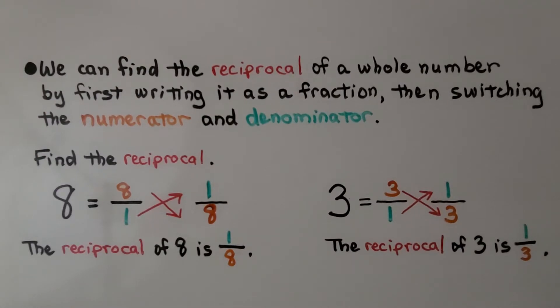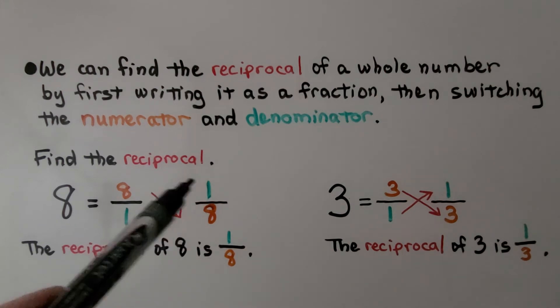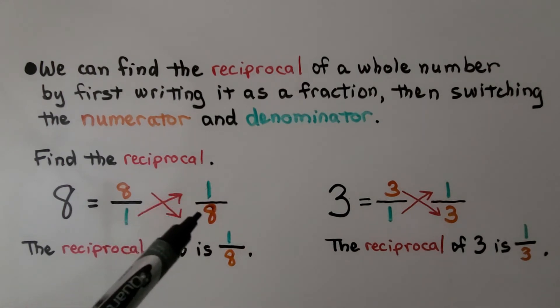We can find the reciprocal of a whole number by first writing it as a fraction with a denominator of 1, then switching the numerator and denominator. If we need to find the reciprocal of 8, we write it as a fraction as 8 over 1. Then we switch the numerator and denominator. We get 1/8. So the reciprocal of 8 is 1/8.